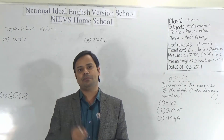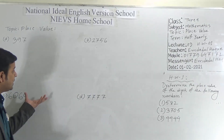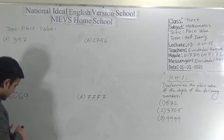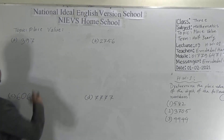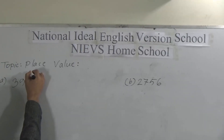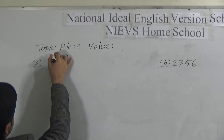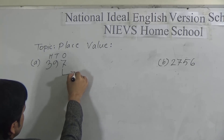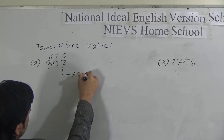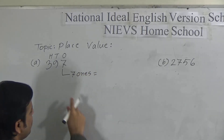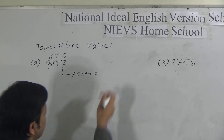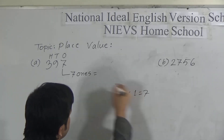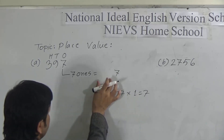Let us see the place value of the digits of the following numbers. To determine the place value, first indicate the position of the digits of the number. Here is the first number: 397. The positions are ones, tens, hundreds. So seven — the place value of seven will be seven ones. Seven is in ones position, so we multiply seven by one, which equals seven.